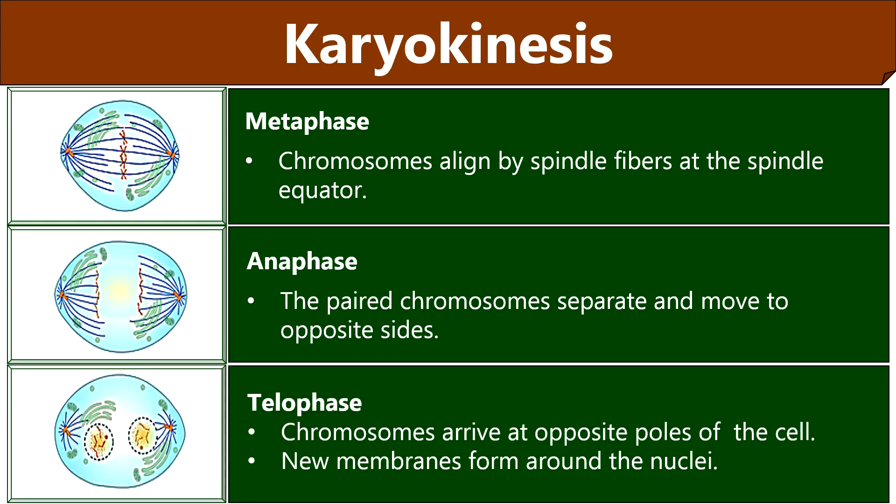Telophase is the last stage of karyokinesis, in which the chromosomes cluster at the opposite spindle poles and a nuclear membrane develops around the clusters of chromosomes. This results in the formation of two daughter nuclei. Also during this stage, the nucleolus reforms.